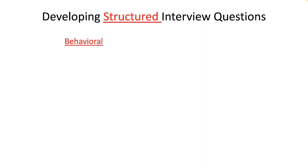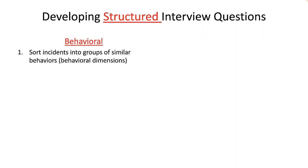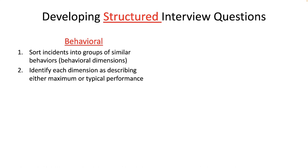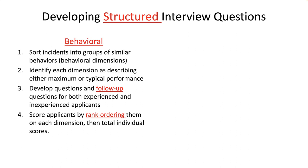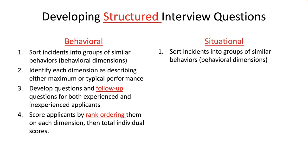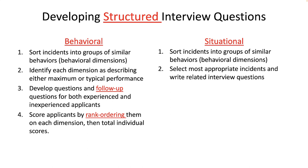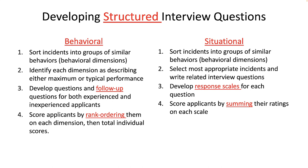For behavioral questions, the process is to sort the incidences into groups of similar behaviors, usually referred to as behavioral dimensions; identify each dimension as describing either maximum or typical performance; develop questions and follow-up questions for both experienced and inexperienced applicants; and then score applicants by rank ordering them on each dimension. For situational questions, the process is to sort the incidences into groups of similar behaviors, select the most appropriate incidences and write related interview questions, develop a response scale for each question, and derive applicant scores by summing their ratings on each scale.